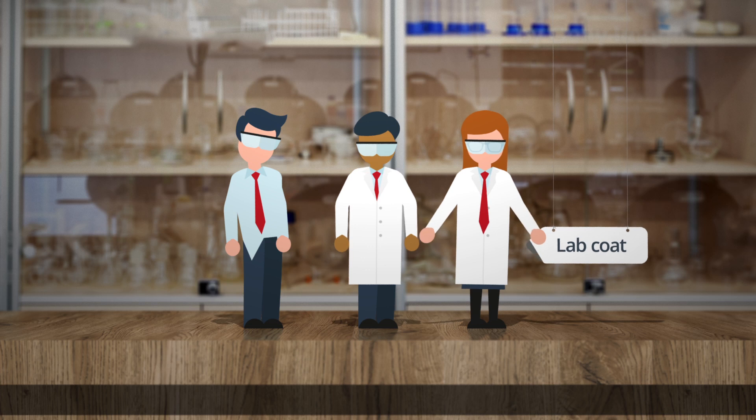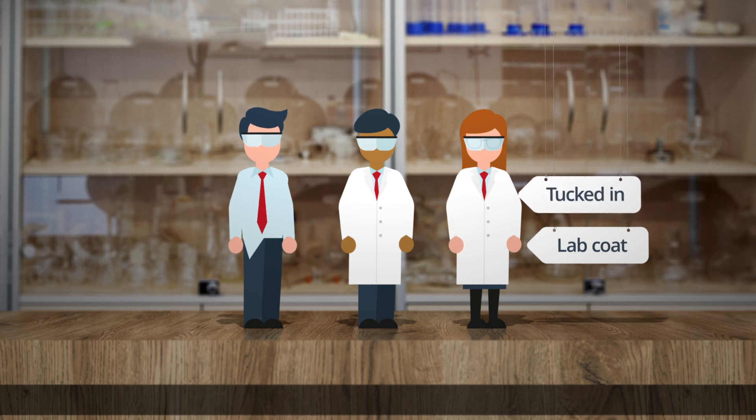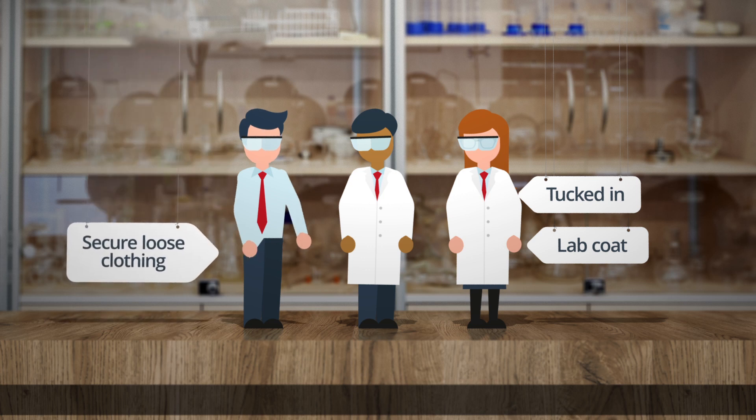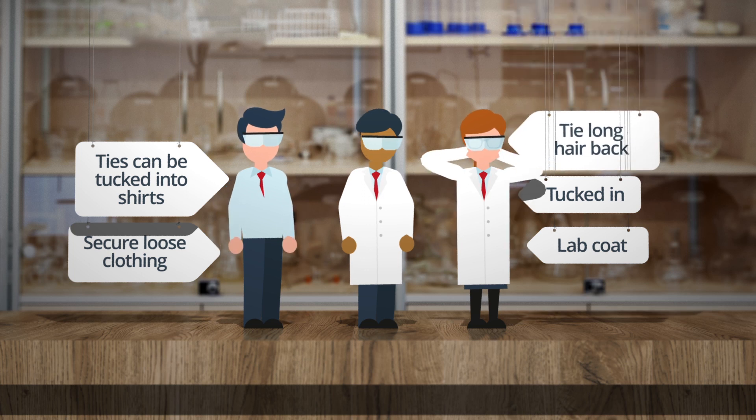Lab coats protect clothing and skin from coming into contact with chemicals used. Any loose clothing should be tucked into the lab coat securely. If lab coats are unavailable, ask learners to ensure loose clothing is secured by other means. For example, ties can be tucked into shirts. You should also ensure that learners tie long hair back.